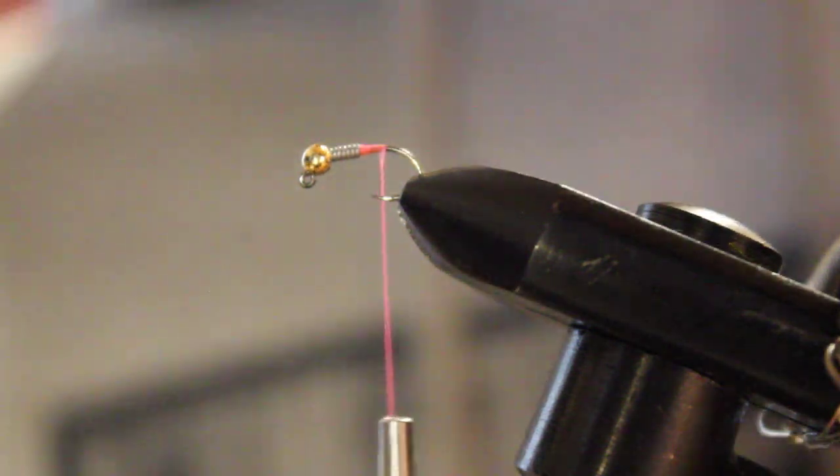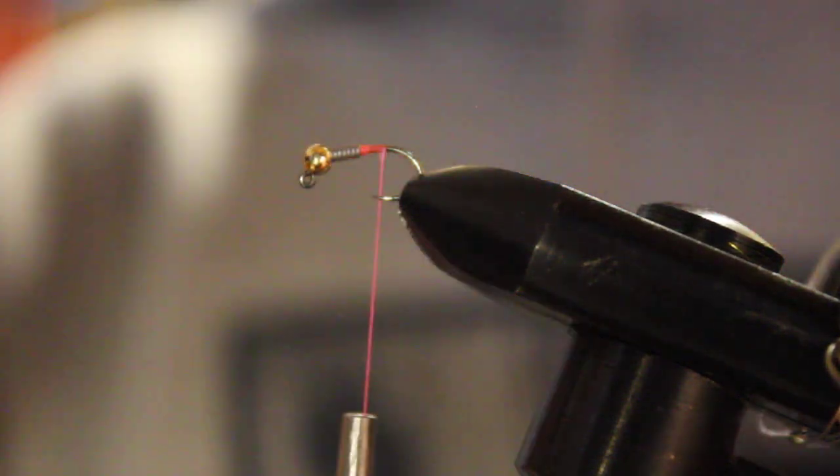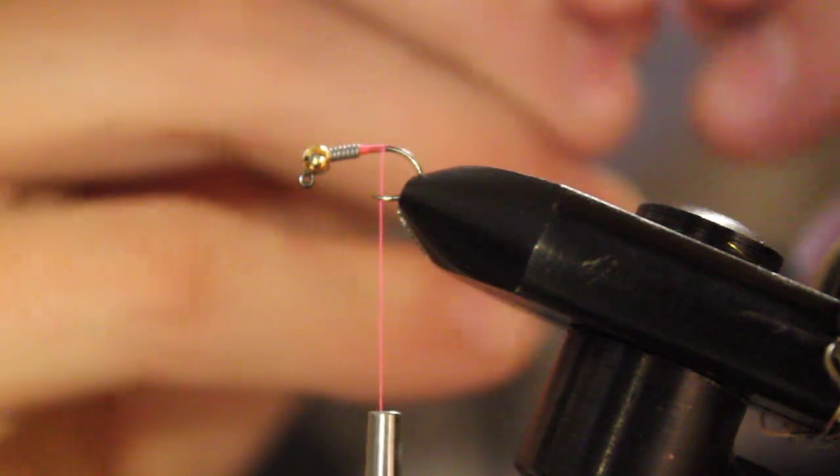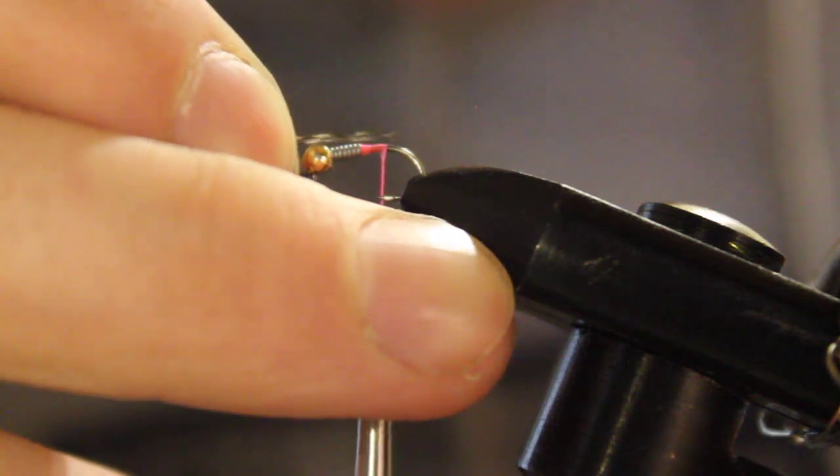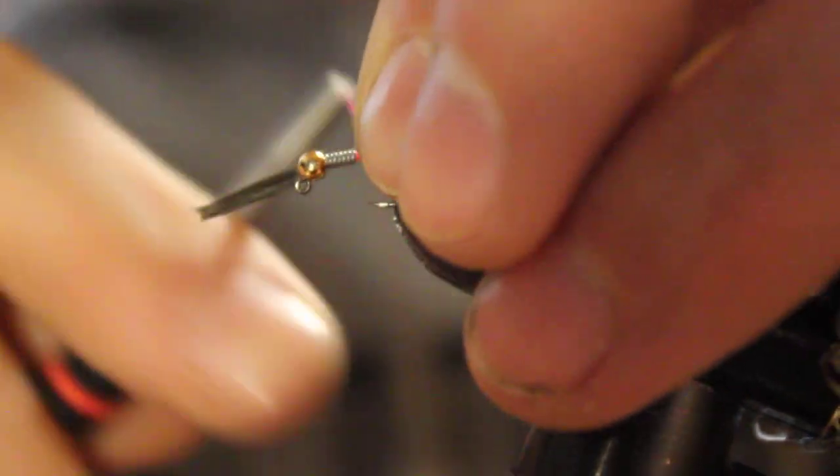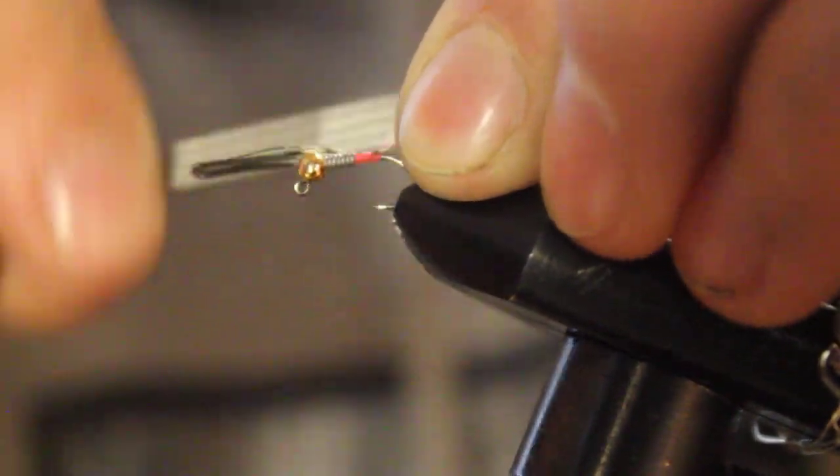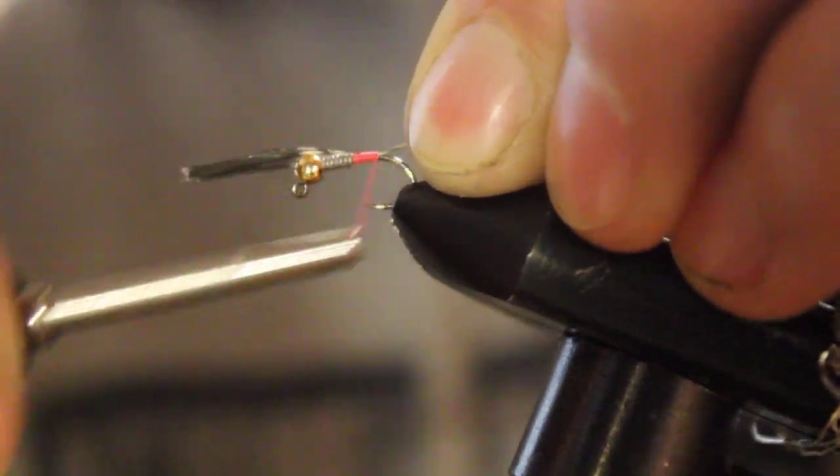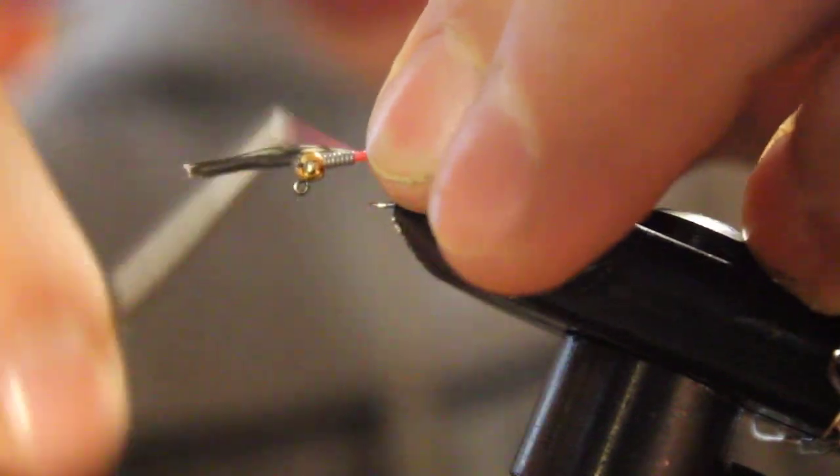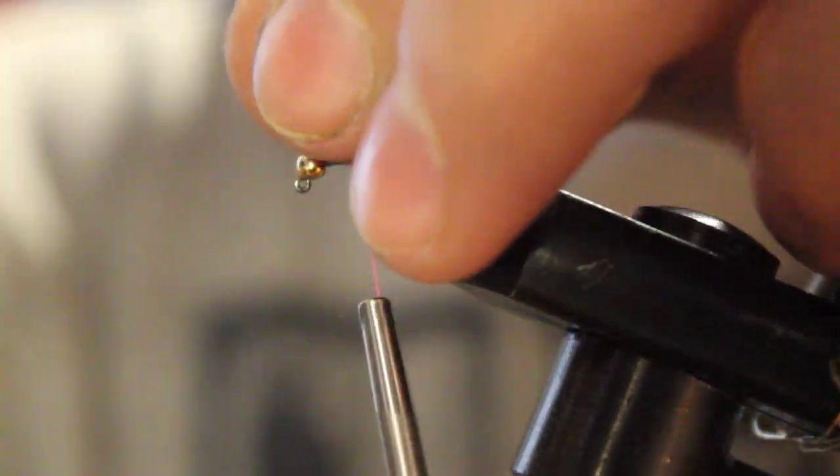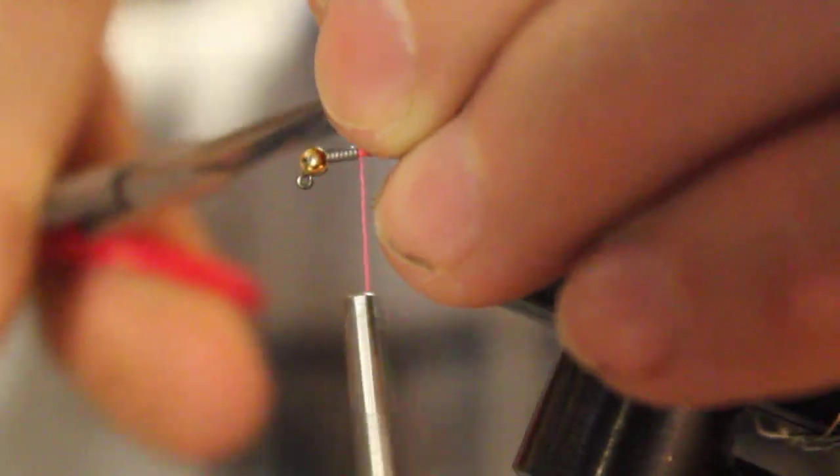First we are going to tie in our tailing material which is the Coke de Leon. We are going to take out about 10 or so fibers, measure them to be a little bit shorter than a hook shank in length. Tie that in and wrap it back. Be sure not to wrap down the bend of this hook. You don't want it curved down. Snip this as close as you can, right behind the lead. You don't want to have to wrap this up over the lead.